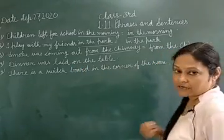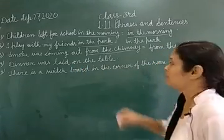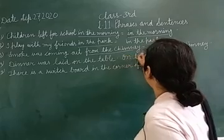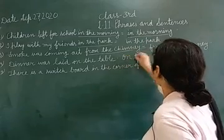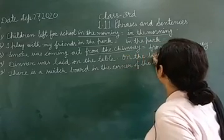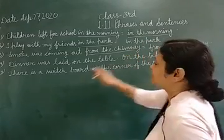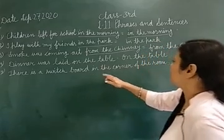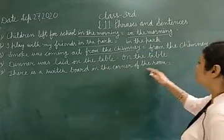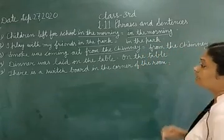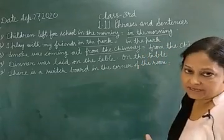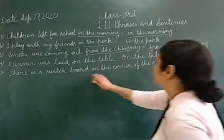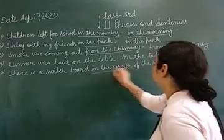Where is 'on the table'? On the table. Next: 'There is a switchboard in the corner of the room.' The phrase is 'in the corner of the room'.